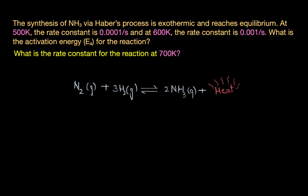For an exothermic reaction, we can consider the heat evolved as one of the products as well. So the reaction would be N2 plus 3H2 forms 2NH3 plus heat.